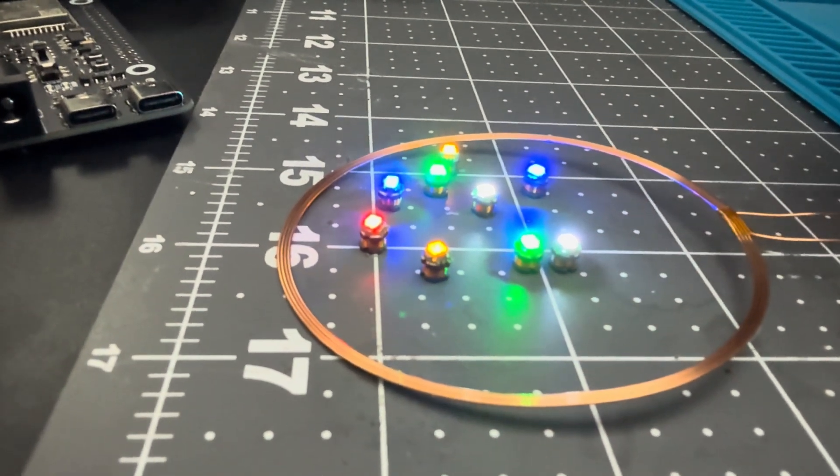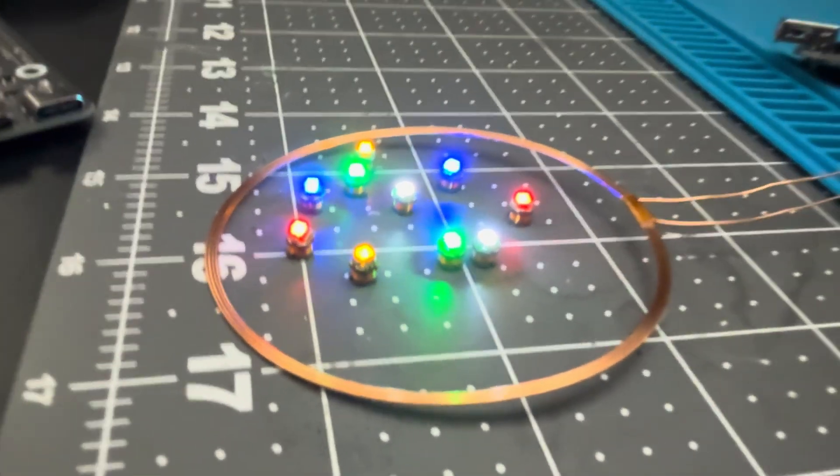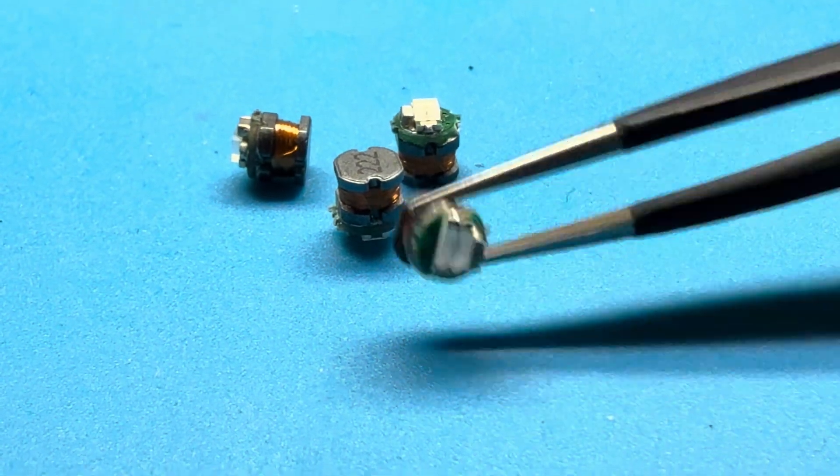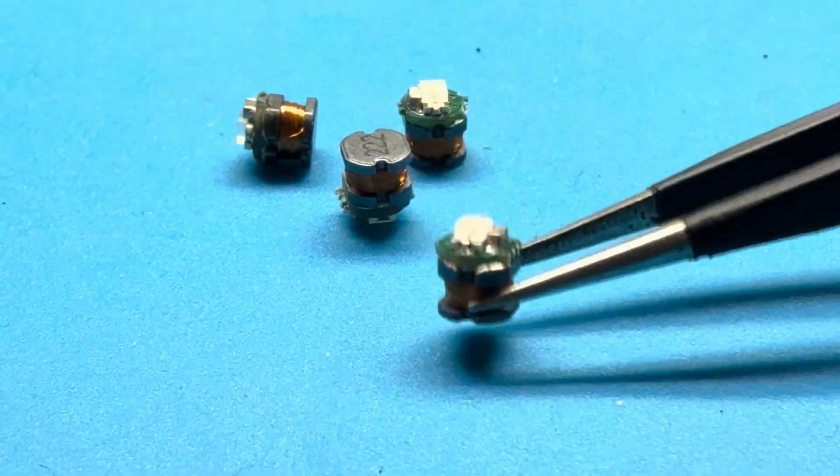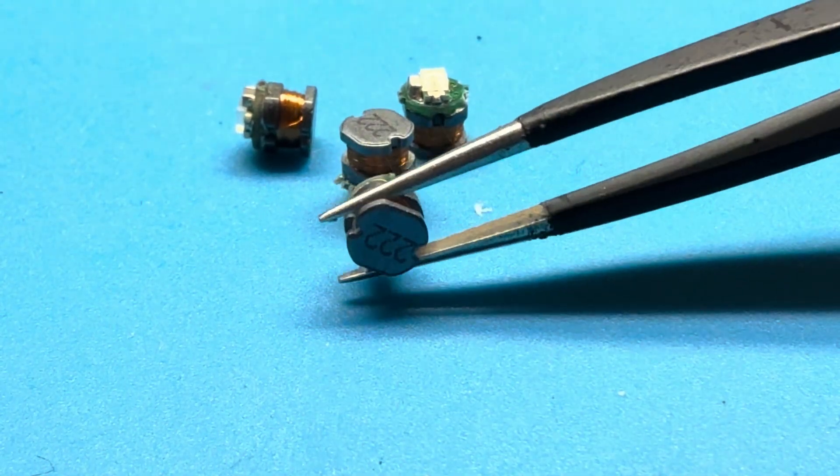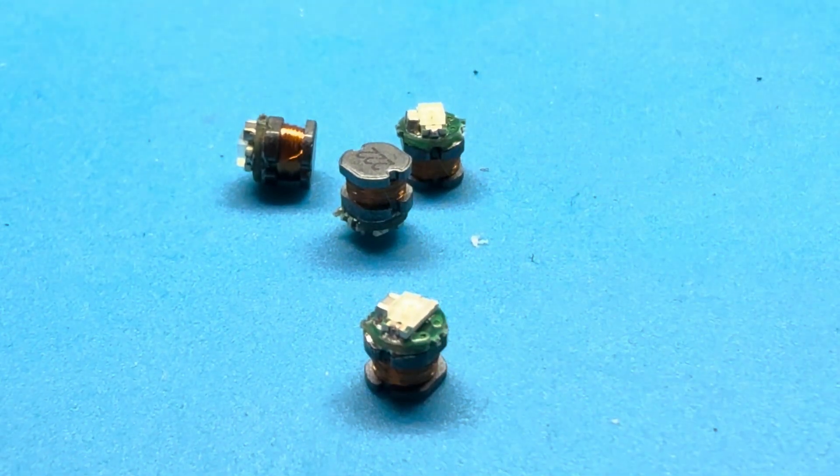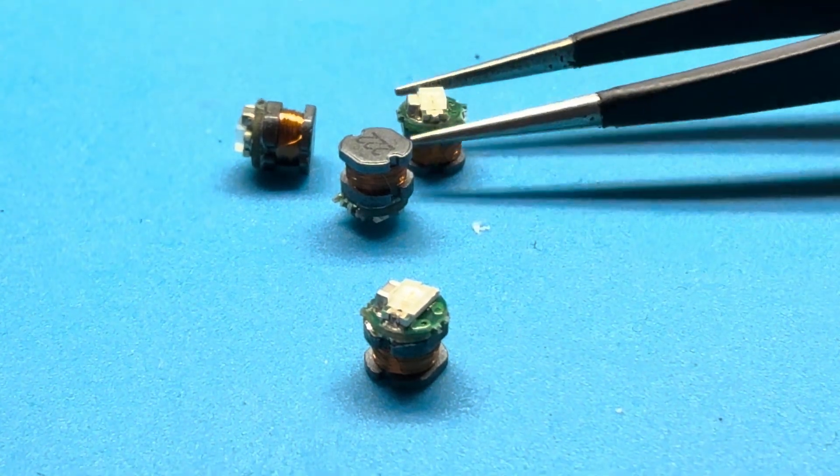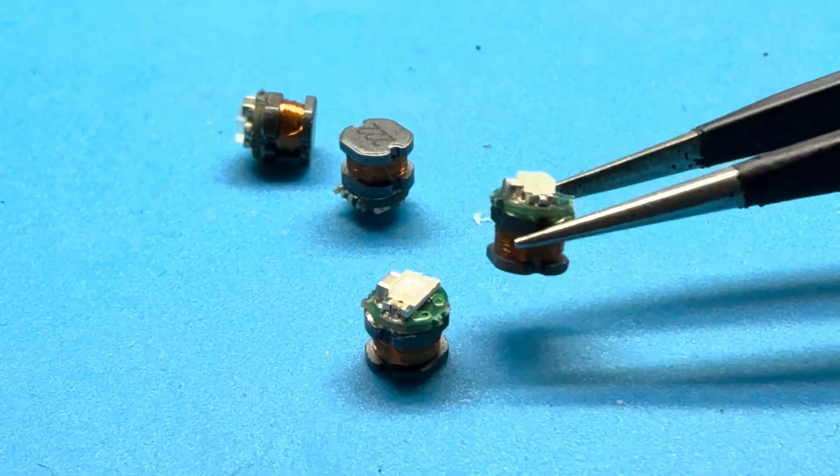These are basically just an inductor soldered to a tiny circuit board with an LED on it. The inductor is acting as an antenna, so the transmitter ends up powering the LED inductively.